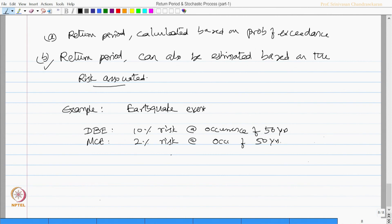So now I want to estimate return period based upon the risk level. Return period can be given as 1 minus (1 minus 1 by t) to the power n. Let us substitute the risk is 0.1, that is 10 percent: 1 minus (1 minus 1 by t) to the power 50, which amounts the return period as 475 years.